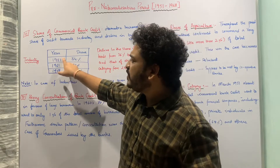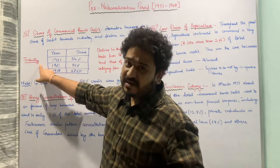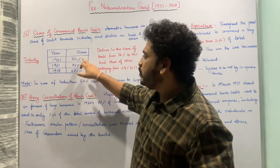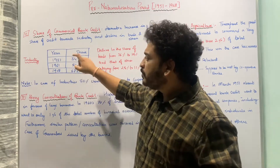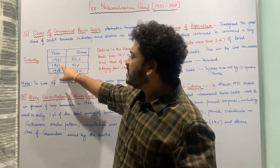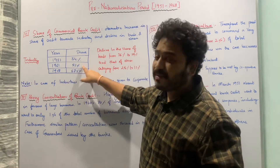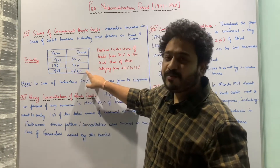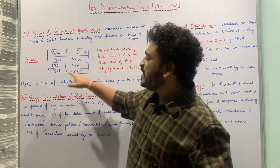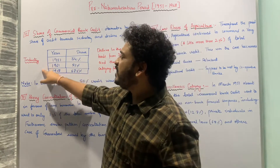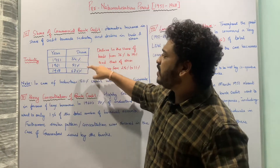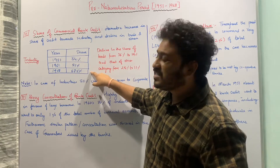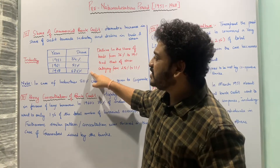Looking from 1951, the share of commercial banking credit towards industry was 34% in 1951. It rose to 51% in 1961, and further to 67.5% in 1968. So in about 17 years, the industry share almost doubled from 34% to 67.5%.